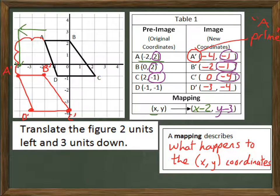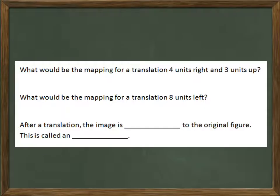So let's kind of put this together with some other examples. Our first question here is what would be the mapping for a translation four units right and three units up? Well, we know that two left and three down came out to be X minus two and Y minus three from that previous example. So what do you think it would be for four units right and three units up? Pause the video real quick, write it down, and see if you get it right.